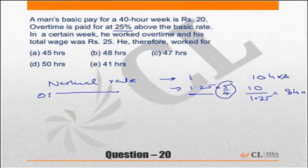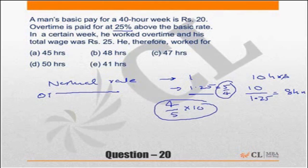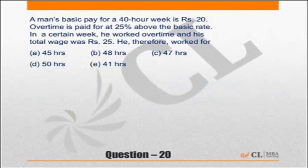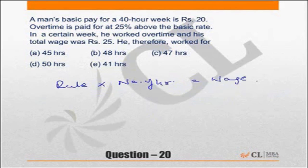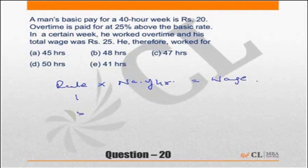This is what we need to remember. The rate becomes 5/4 times, so the time for which he will get the same pay becomes 4/5. This comes from the formula: rate × number of hours = wage. If the normal rate is 1 and hours are whatever, he gets a certain wage. If the rate becomes 5/4 times, the number of hours will become 4/5 times for the same amount.